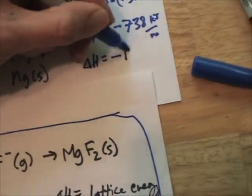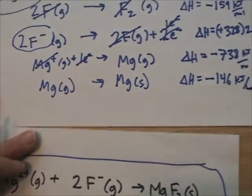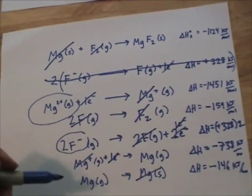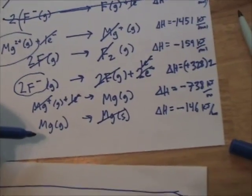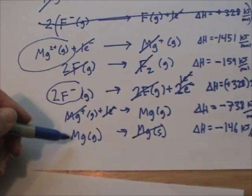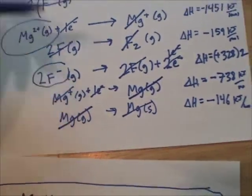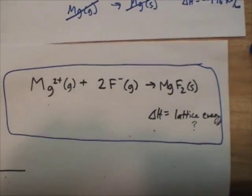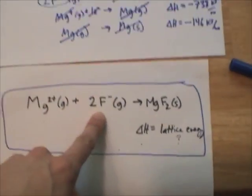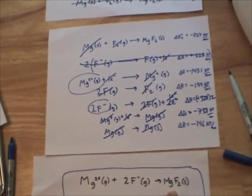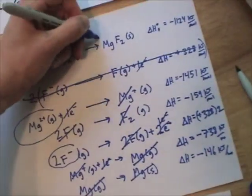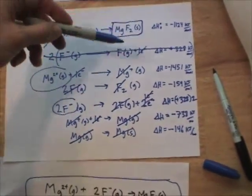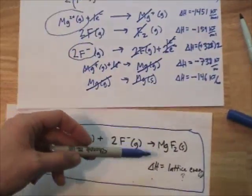The delta H is negative 146 kilojoules per mole. And now we can cancel the magnesium solid. And we're left with this magnesium gas, which was right over here. So those cancel. So now, all we've done is just redraw the equations, flipping them to be able to get our target lattice energy reaction where magnesium cations and fluoride anions react to form magnesium fluoride solid. And all we have to do now is just add up all those delta H's and we'll get the delta H for the lattice energy.